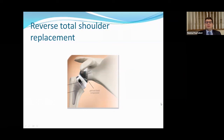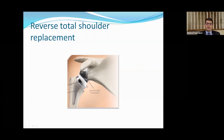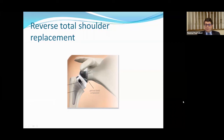Finally, there is the reverse shoulder replacement. It's called a 'reverse' because we actually screw a ball onto the socket side of the shoulder, and then place a stem with a socket on the ball side of the shoulder — hence the term reverse shoulder replacement. This type of replacement is done for folks who have moderate to severe shoulder arthritis and have large rotator cuff tears that are not amenable to fixation.